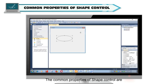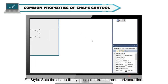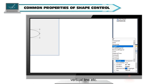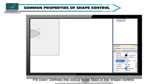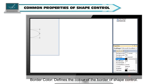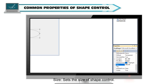The common properties of shape control are: Fill Style, which sets the shape fill style as solid, transparent, horizontal line, vertical line, etc. Fill Color defines the color to be filled in the shape control. Border Style sets the border style of a shape control to solid, transparent, dash, dot, etc. Border Color defines the color of the border of the shape control. Size sets the size of the shape control.